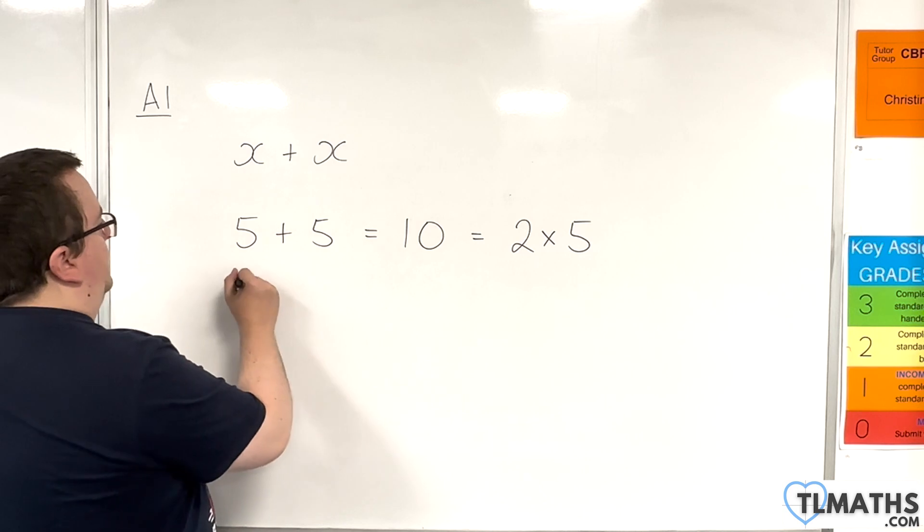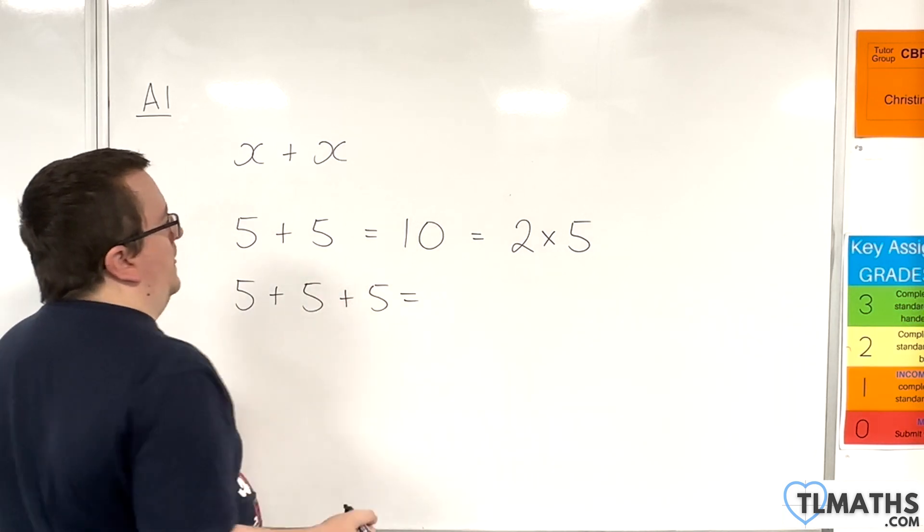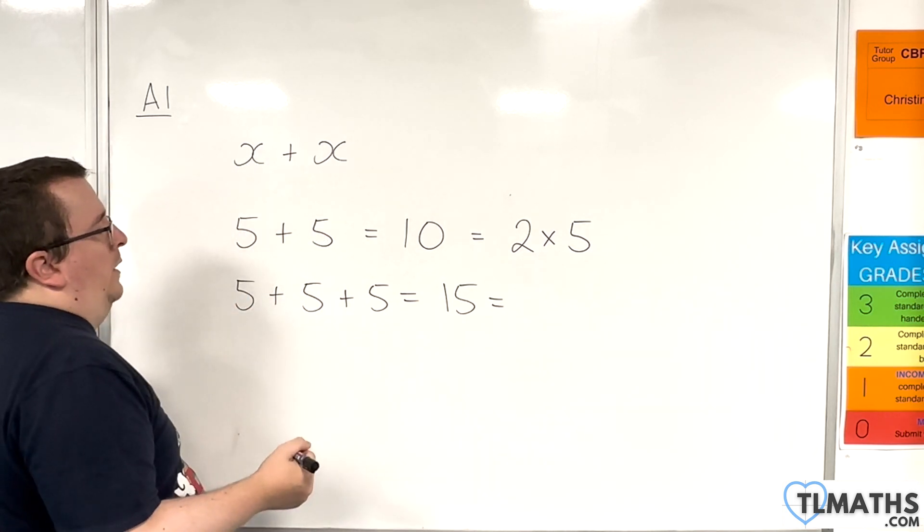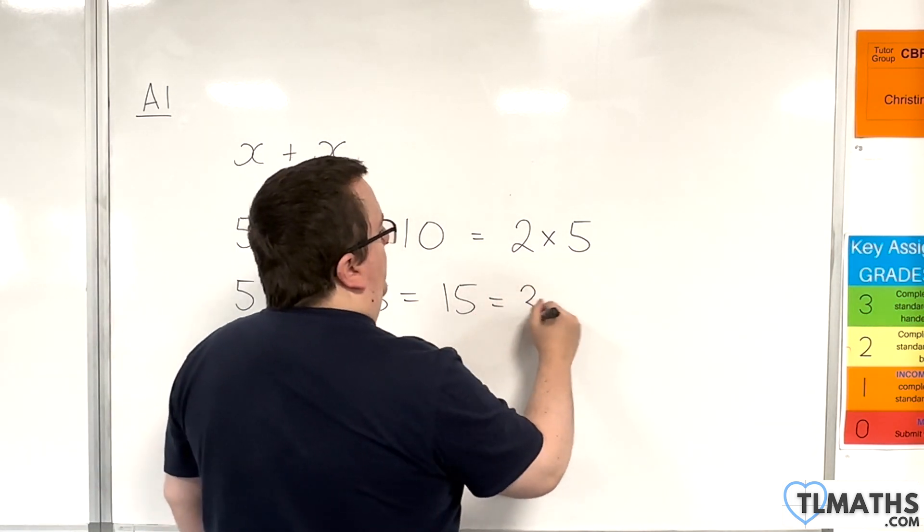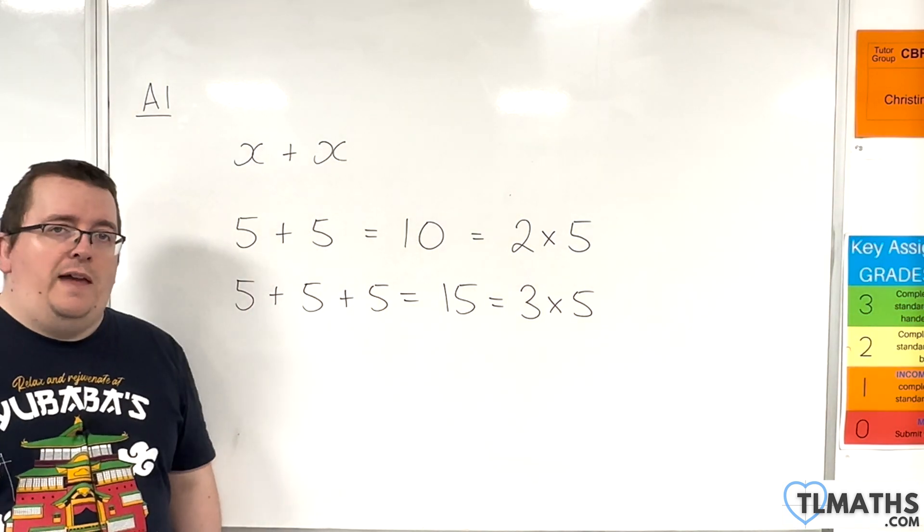So let's look at 5 plus 5 plus 5. Well, of course, that's 15. And 15 can be written as 3 times 5 because we've got three 5s being added together.